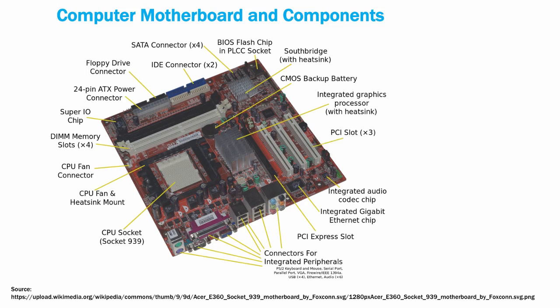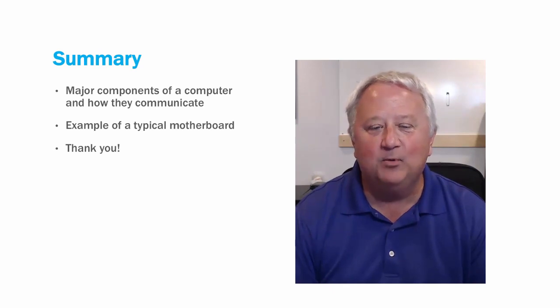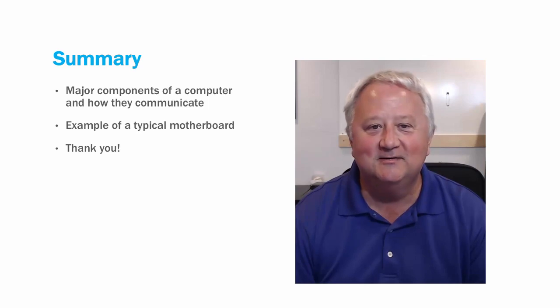On the back of the computer are the input/output connectors we talked about. You'll see support for plugging in an Ethernet cable for a local area network, and you'll also see USB connectors for universal serial bus that we talked about as well. That concludes our brief look at the components of a computer and how they fit together. Hopefully this gives you a good idea of the major components and how they operate. Thank you so much, and I'll see you in the next lesson.